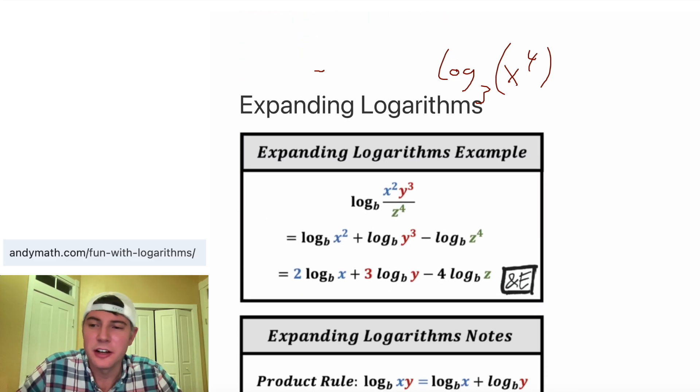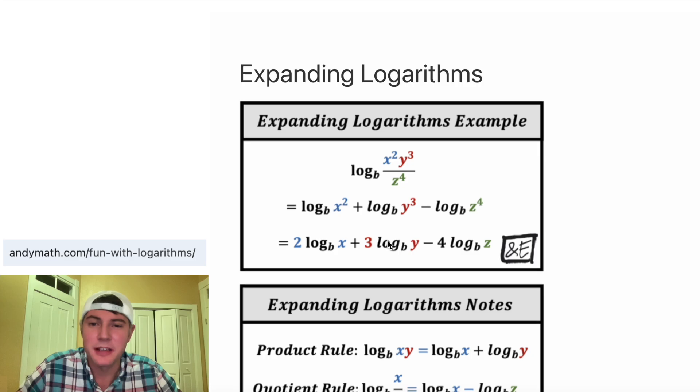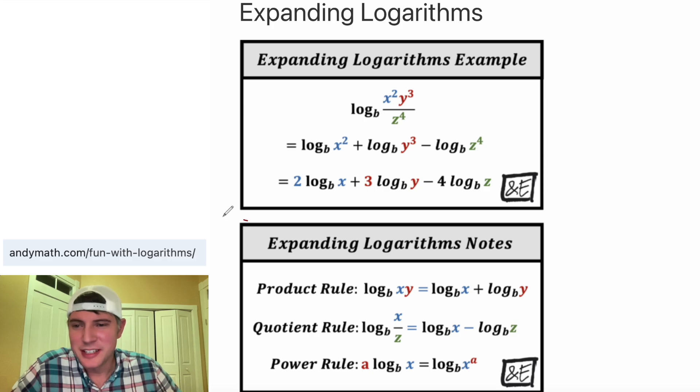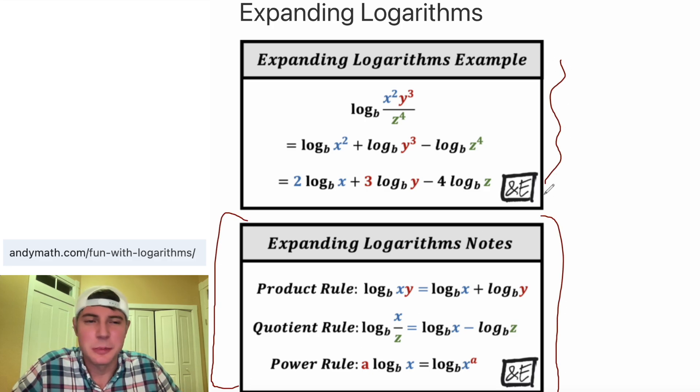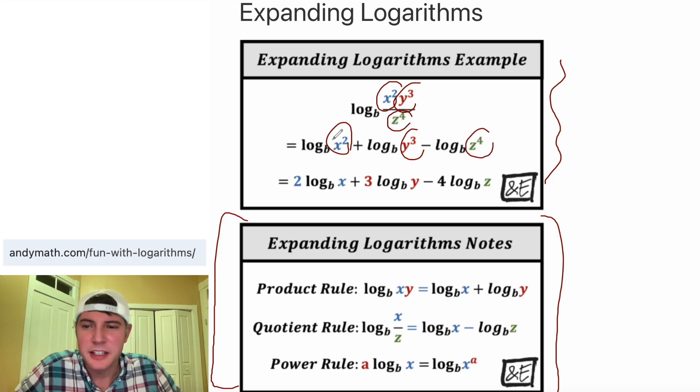And then same thing for expanding logarithms, which is basically the exact same thing, but you're going the opposite direction. So I guess it's the exact opposite of the same thing. So it's the exact same notes right here. I just repeated them. But then here's an example of expanding. So everything on top gets a plus. So this is positive and this is a plus. And then the z to the 4 on bottom goes on bottom. And then last, we bring down the exponent. So that 2 is brought down, the 3 is brought down, and the 4 is brought down.